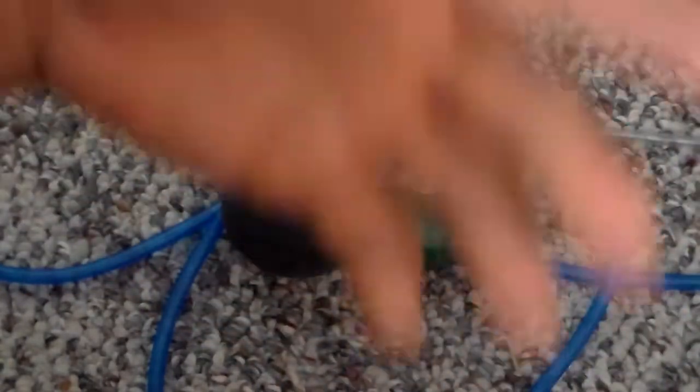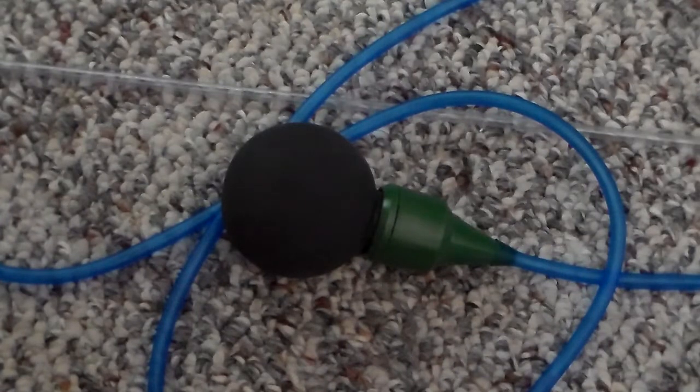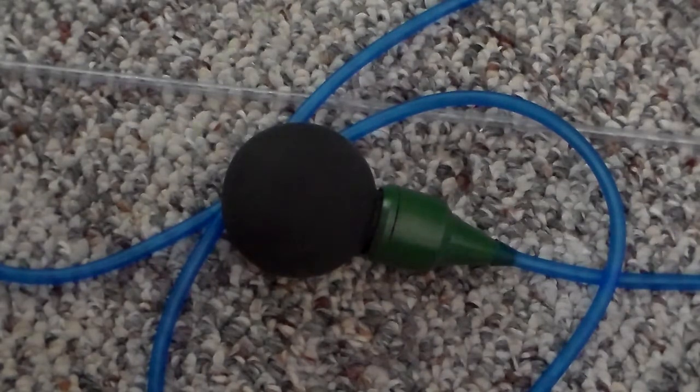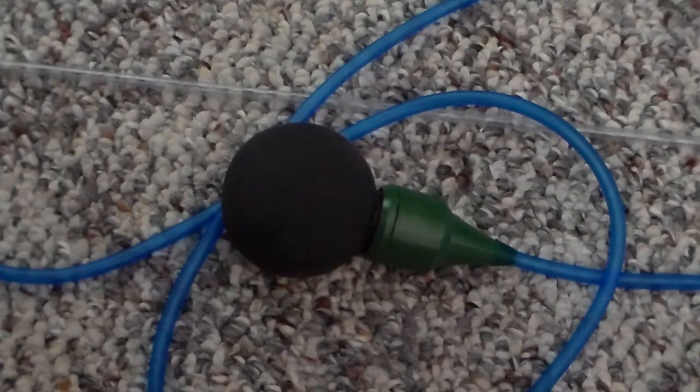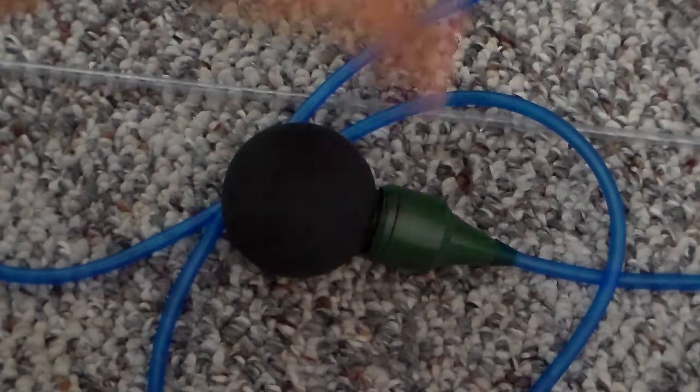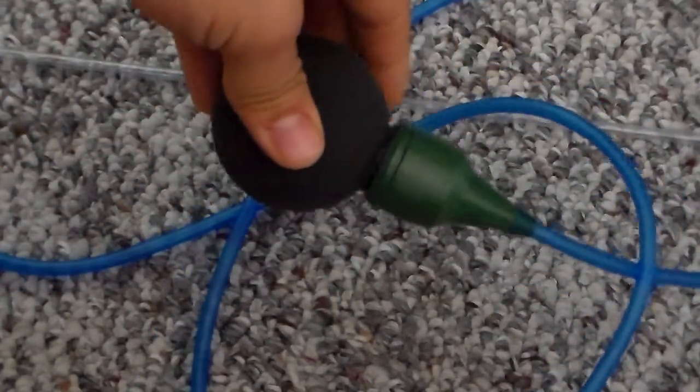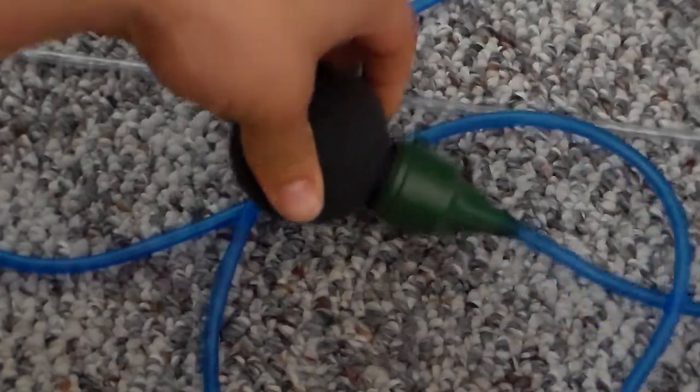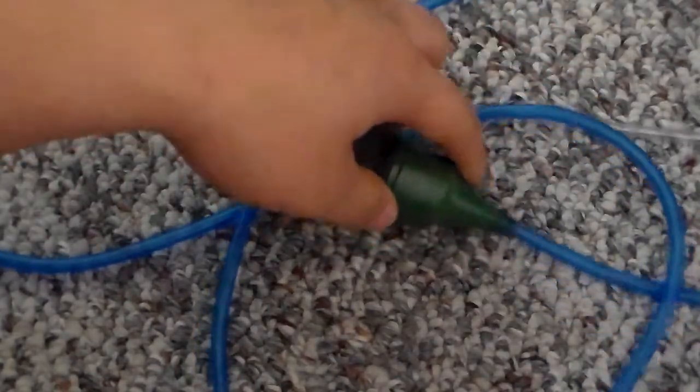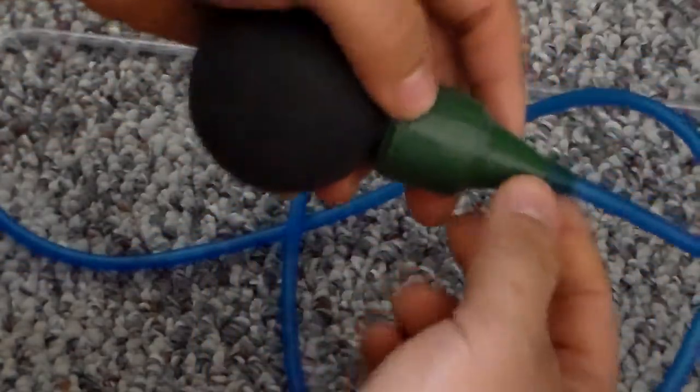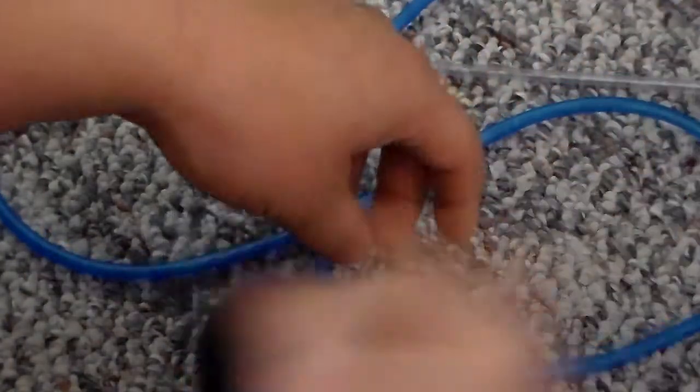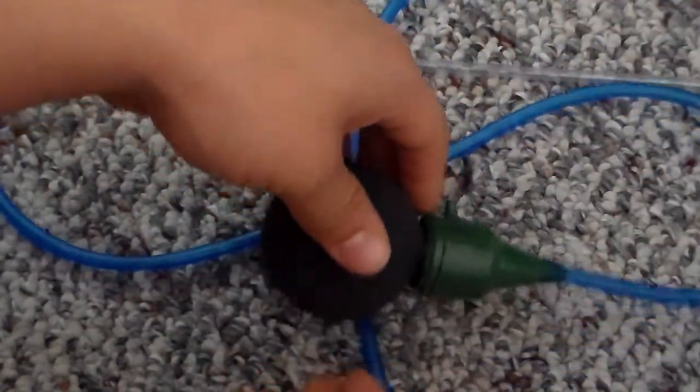It gets the water going and primes it. It's also very useful if you want to do a water change and create suction, but you don't want to suck at the end of the hose and get a mouthful of water. With a few pumps, you'll get the water going at the end of the hose, then you take that out and the suction will work.